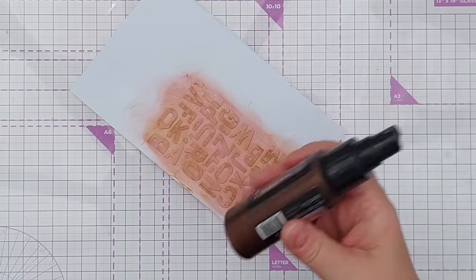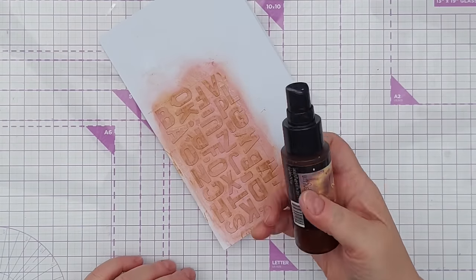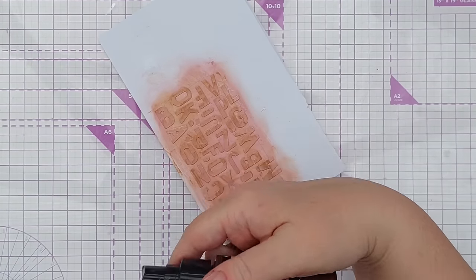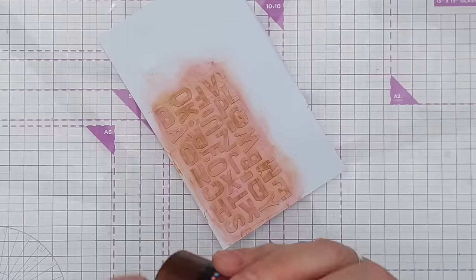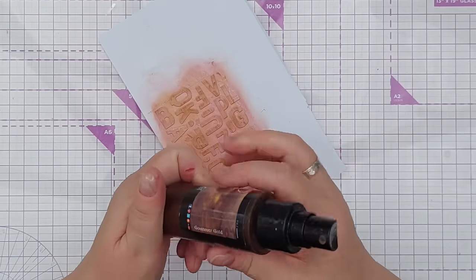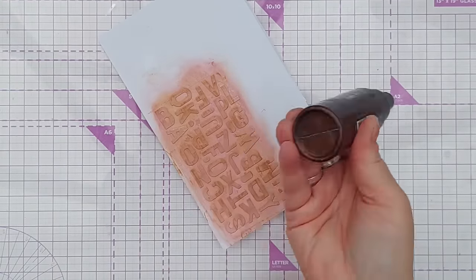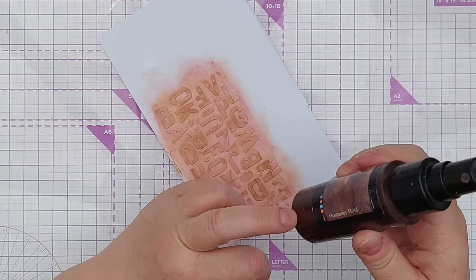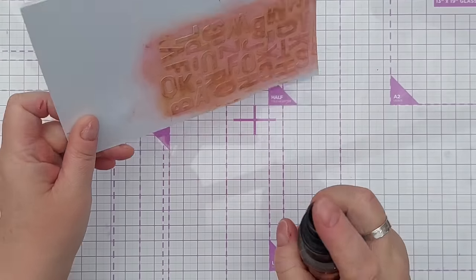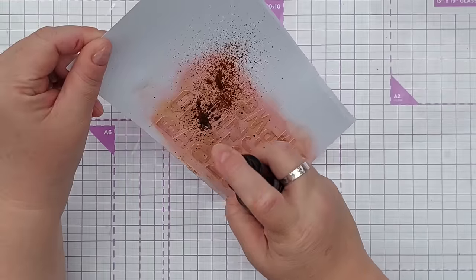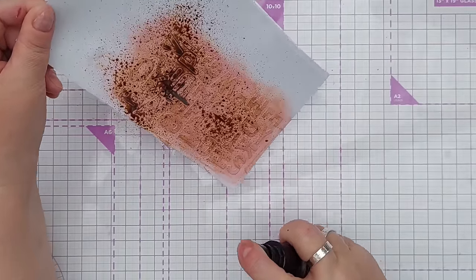And now I'm going to add a bit of a deeper, darker color. I've got this Lindy's Stamp Gang Moon Shadow Mist in I think it is Pirates Gold or something like that. I've had this for absolutely donkey's years and there's about this much left in it now. Sometimes it spritzes and sometimes it doesn't, so we'll just have to wait and see.